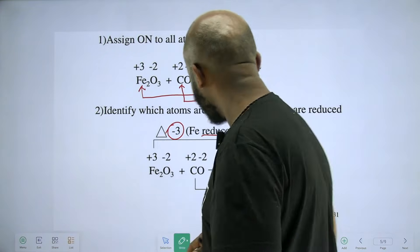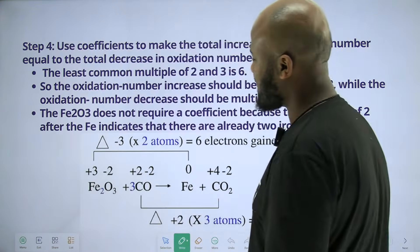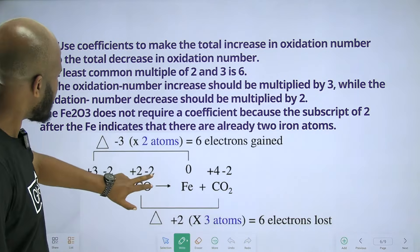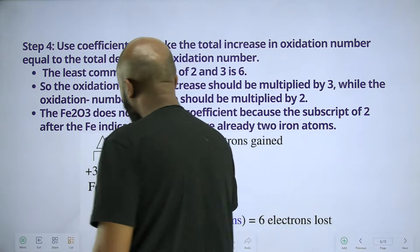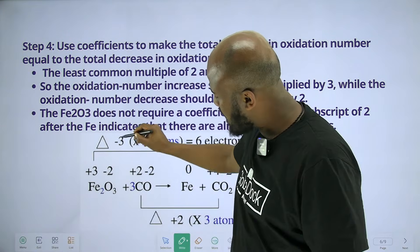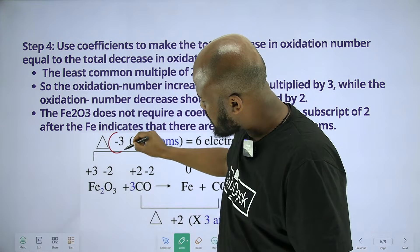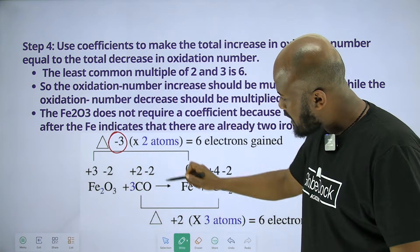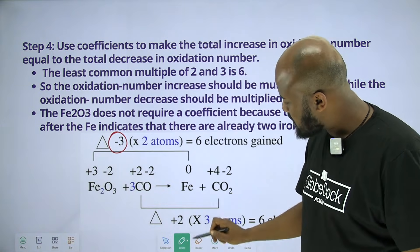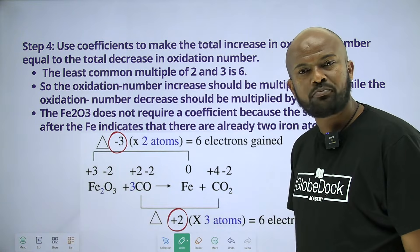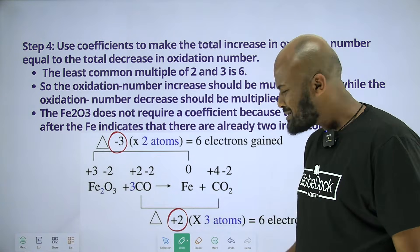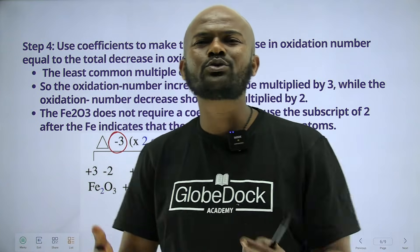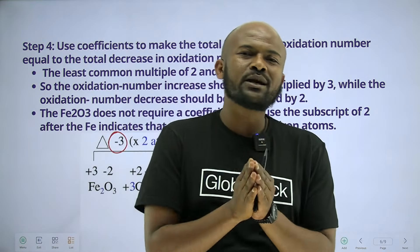So the balance of the electron is to gain the electron and reduce the electron. Plus 2, plus 2.